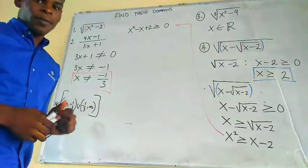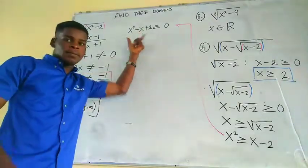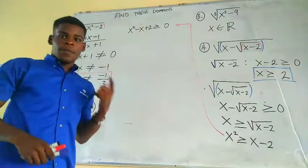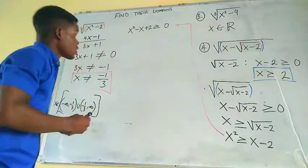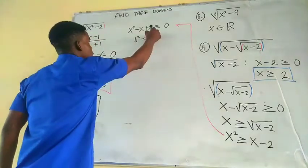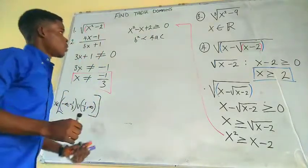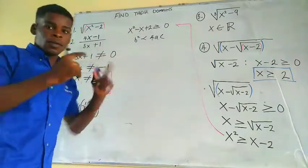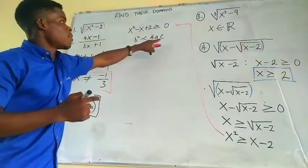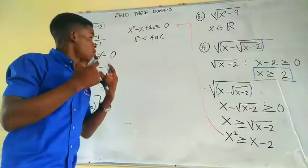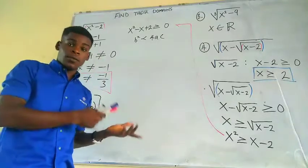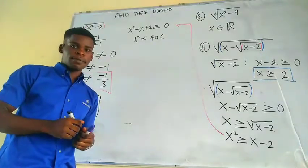Unfortunately, we cannot factorize x² − x + 2, and it has no real roots. We check: b² = (−1)² = 1, and 4ac = 4 × 1 × 2 = 8. Since 1 < 8, b² < 4ac, meaning the discriminant is negative and there are no real values for x that make it zero.